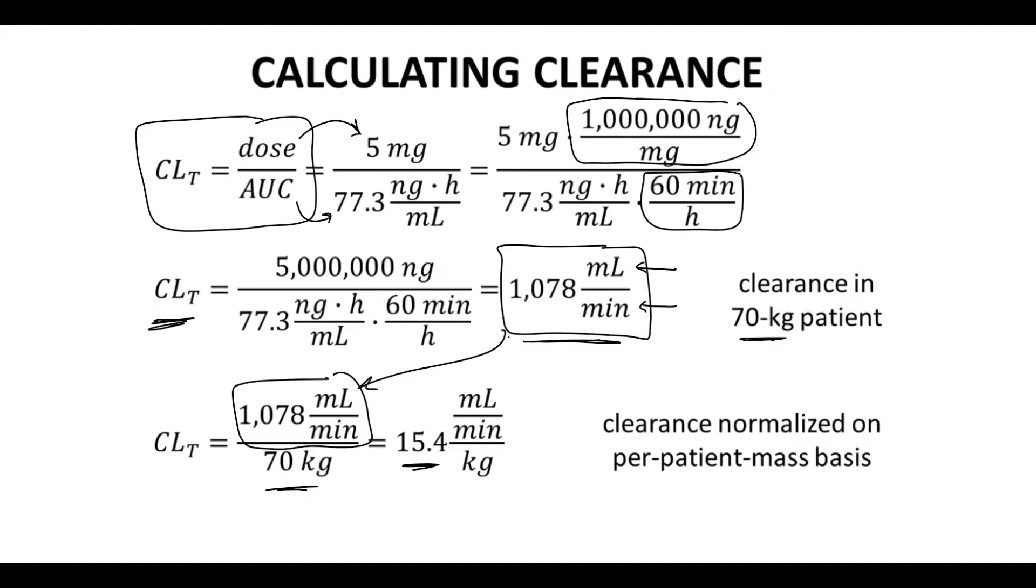Now be careful with these calculations in terms of watching your units. It's a very common mistake. There is no idealized clearance value. Clearance values can range from, I would say, on a per kilogram mass from 0.5 to 50. So there's a big range in observed clearance values. So there's no ideal number.